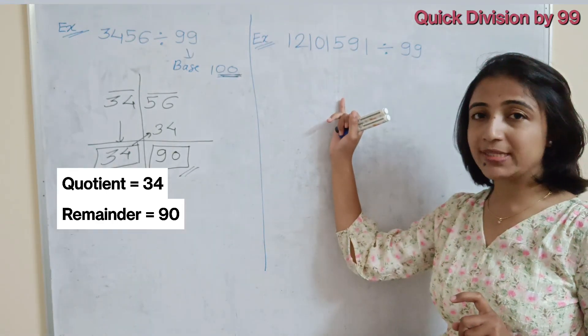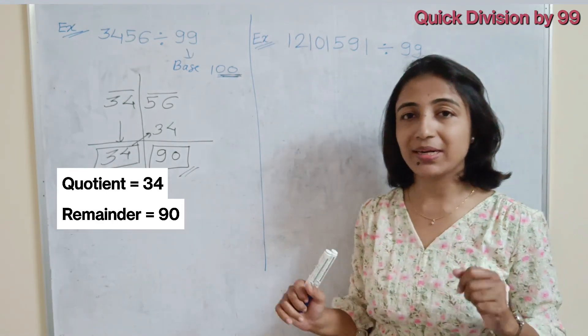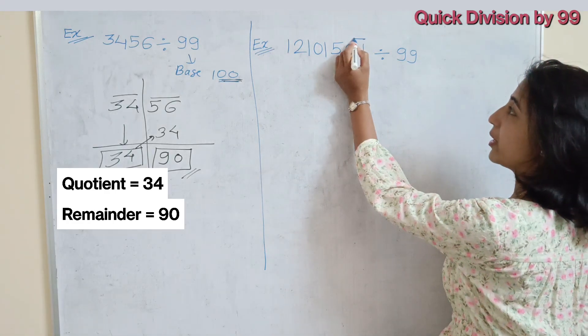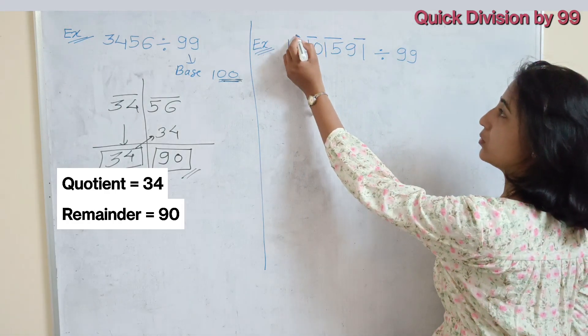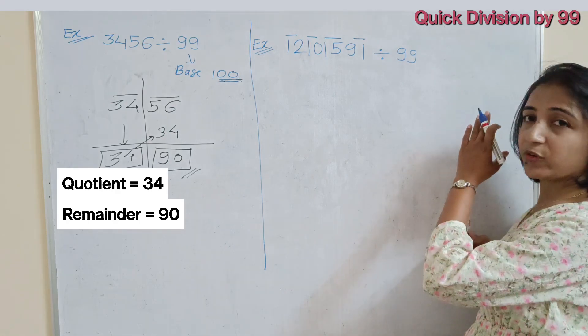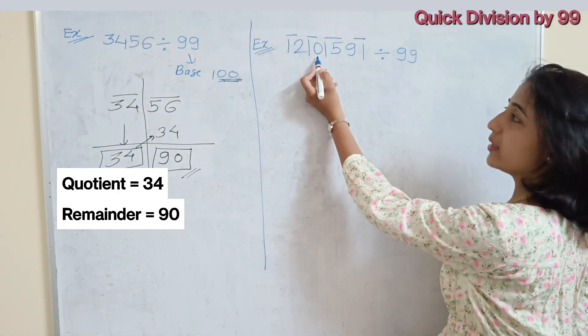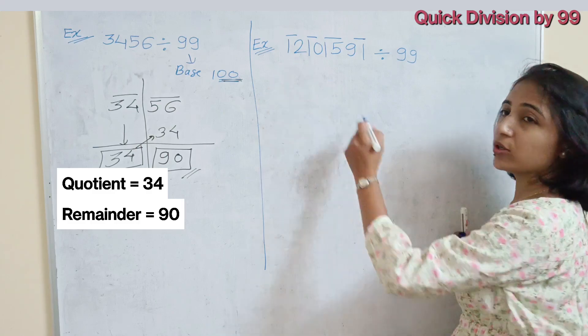Now, I will explain this one more example to understand this concept clearly. Here, our given number you have to write in the pair of 2, 2, 2, 2. So make the pair of number 2, 2 start from right side. So first pair is 91, second 15, then next 10, next is 12.